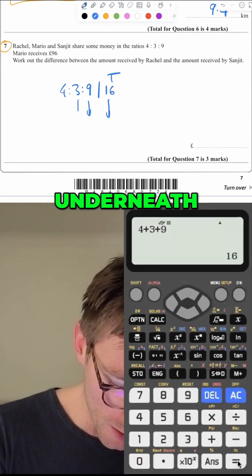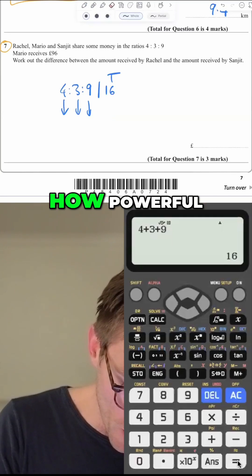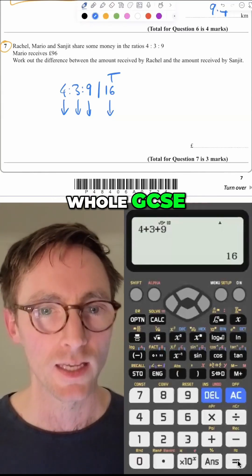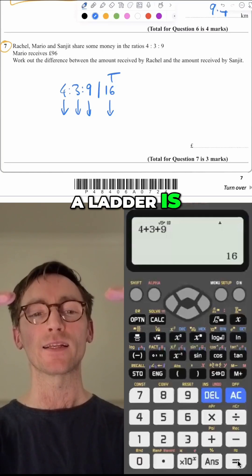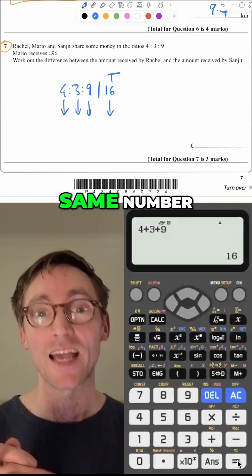Then you're going to draw an arrow underneath each one. And this is what I call a ladder. Now, if you've seen me do the ladder before, you're going to know how powerful this is. The ladder, you can use it in like 10 different topics in your whole GCSE. Basically, the whole point of a ladder is you're going to times or divide all of these numbers by the same number.